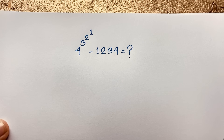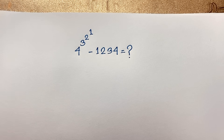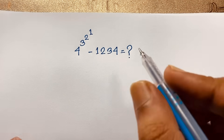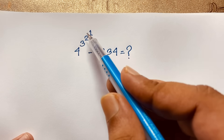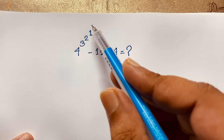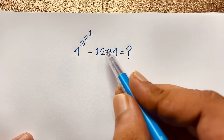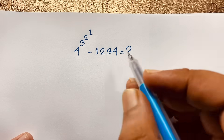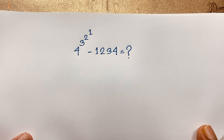Hello everyone, welcome to my YouTube channel. Today we are solving an interesting math question. It is an easy math problem: 4 to the power 3, 3 to the power 2, and 2 to the power 1, minus 1234. This equals what? How to solve this interesting math question without a calculator.